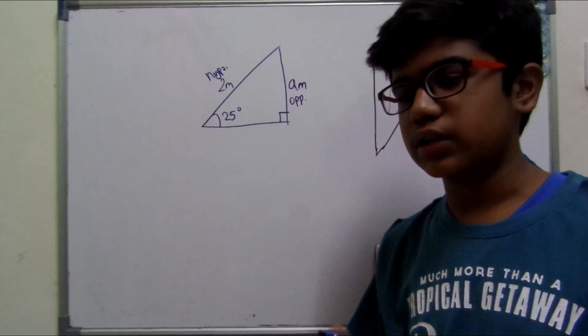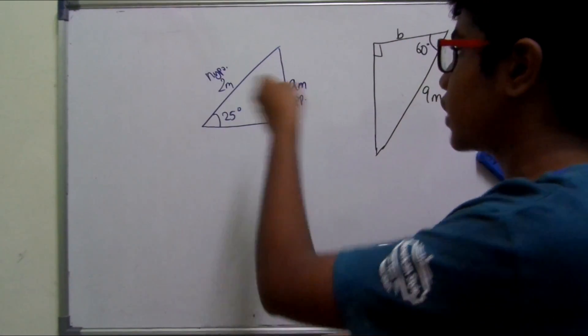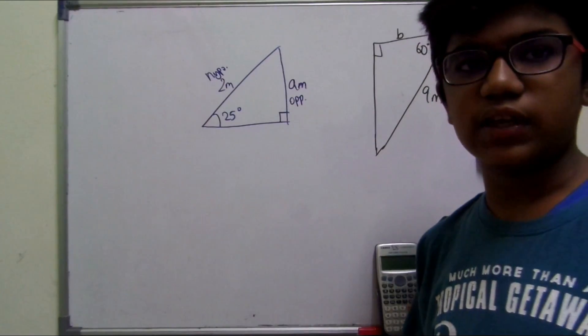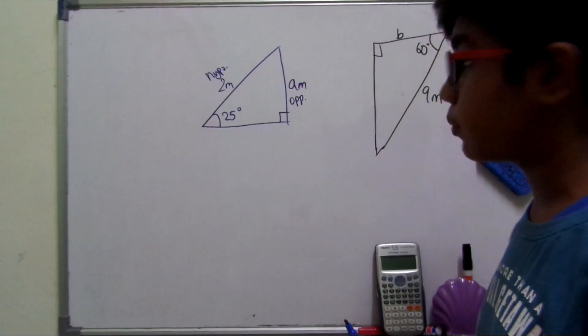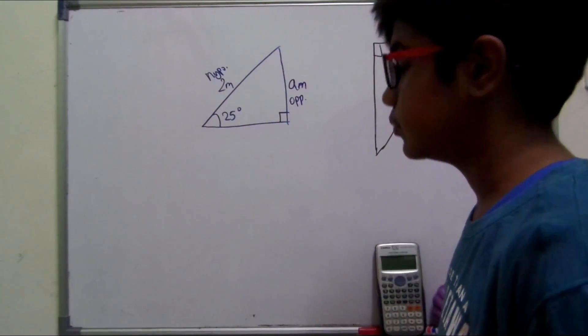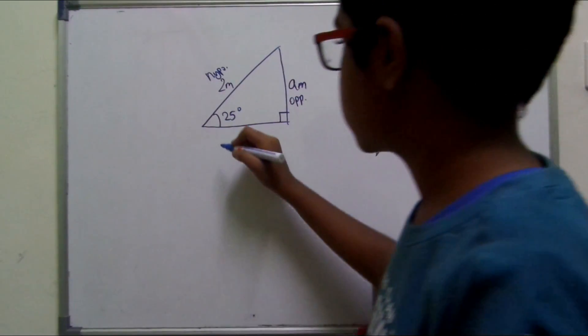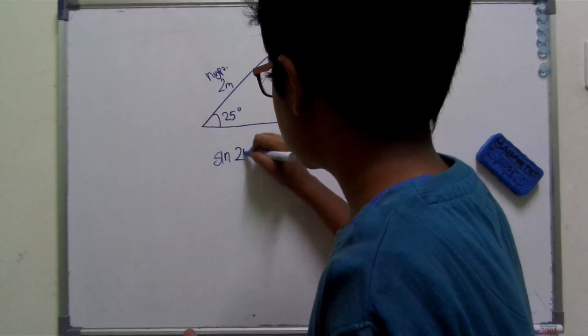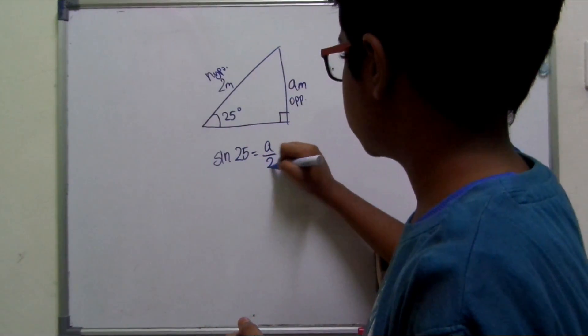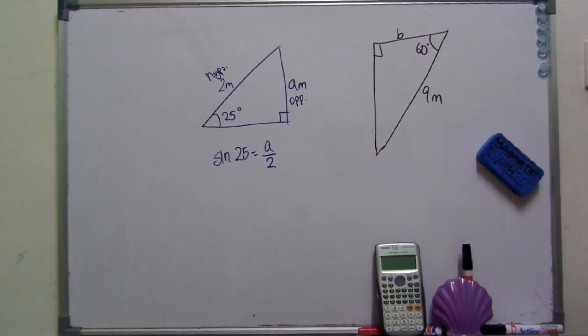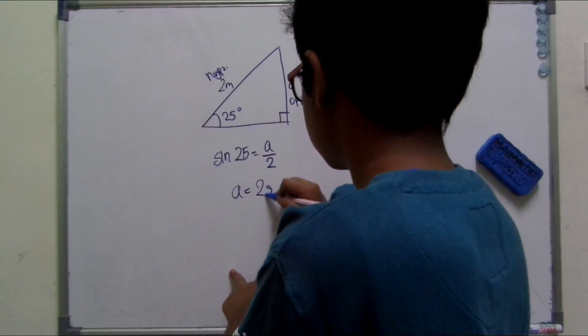So opposite hypotenuse. Which one uses the opposite and the hypotenuse? And the answer obviously is sine. Sine uses the hypotenuse and the opposite. So here, we need to find sine 25. So sine of 25 equals a, opposite over the hypotenuse. We need to calculate the value of a. So leave a on one side and multiply to both sides. So a equals 2 sine 25.